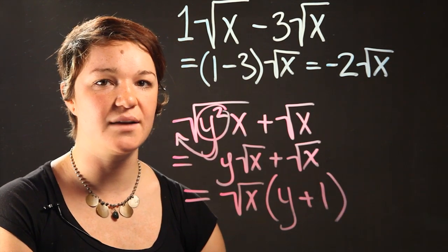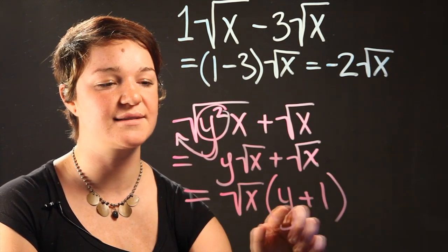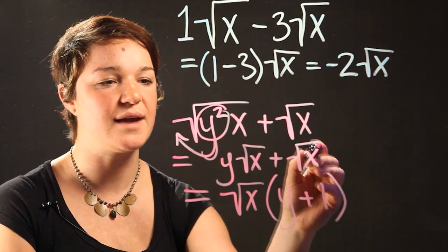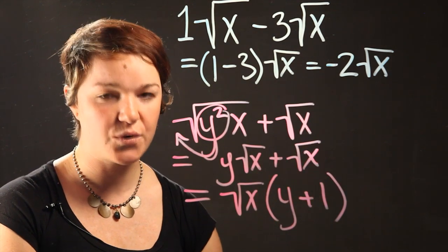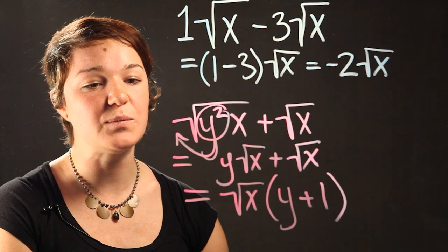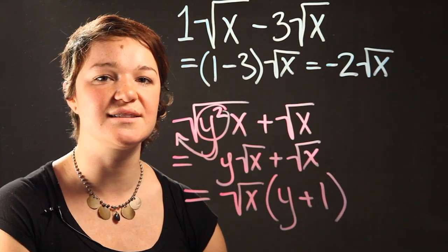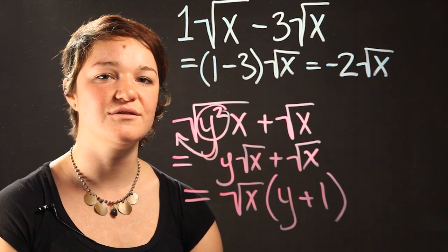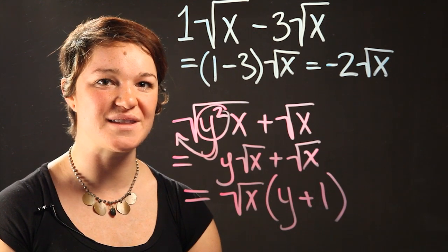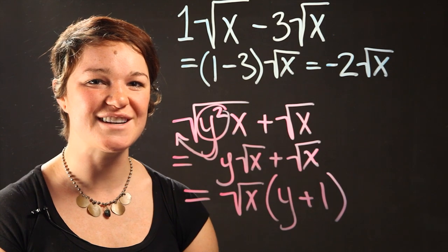And just recognize that when you multiply the radical of x times this equation, what you get is this right here. So either way, both of those answers are correct. And there you have it. That's how you add or subtract radicals with different variables in them. Thanks for watching. I'm Dr. K.